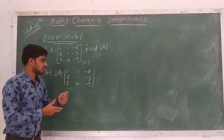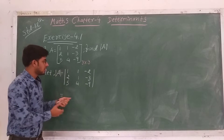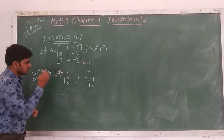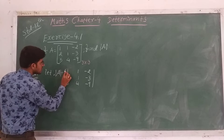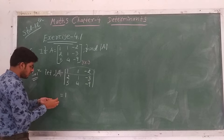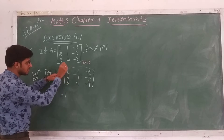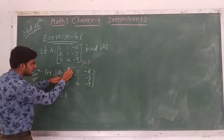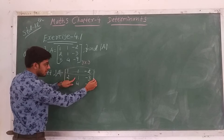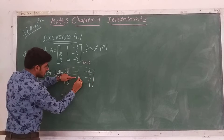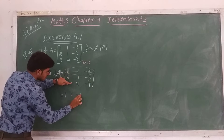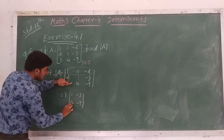We have already discussed in the last video how to find the value of 3×3 determinants. So we will solve it by expanding along the first row. We take the first element a₁₁ and remove its respective row and column — that is, the first row and first column. The remaining elements in determinant form are: 1, -3, 4, -9.